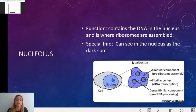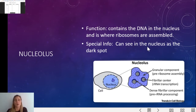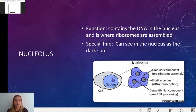Inside the nucleus you have the nucleolus. Looking at this picture, you have your membrane on the outside, your cytoplasm on the inside, then your nucleus with the nuclear envelope around it, and inside the nucleus is the nucleolus. This is where the DNA is and where the ribosomes are assembled. Special to that: you can see the nucleolus as a dark spot inside the nucleus. When we look at cells under the microscope, stained purple, right in the middle of the nucleus is the nucleolus — this purple dark spot.